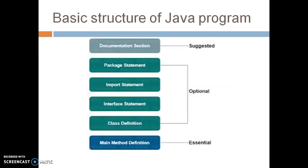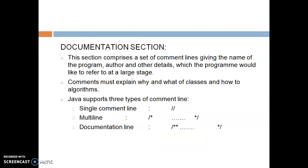Now how will we implement the Java program? We will see the basic structure of a Java program. This is a block diagram of a Java program. Here you can see there are several rectangular sections: first is documentation, then package statement, import statement, interface, class definition, and main method definition. The most important essential section is the main method definition. The rest — documentation section — is suggested. And package statement, import statement, interface statement, and class definition are optional.